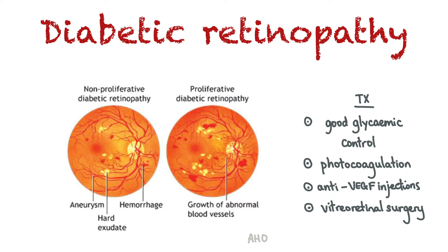Retinopathy can either be proliferative or non-proliferative. In proliferative diabetic retinopathy, there is retinal neovascularization, which has a worse prognosis than non-proliferative. In mild non-proliferative retinopathy, one or more microaneurysms are seen on slit lamp examination of the retina. In the moderate stage, there are also blot hemorrhages, hard exudates and cotton wool spots. In the severe stage, there are blot hemorrhages, microaneurysms in all four quadrants, venous beading in two or more quadrants, and microaneurysms in one or more quadrants.